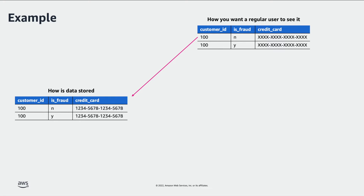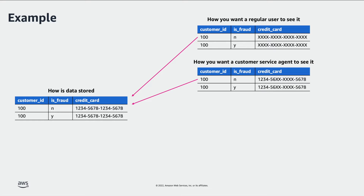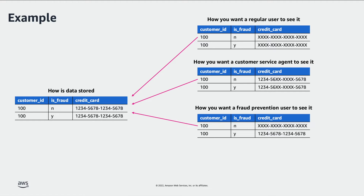For example, when a regular user queries this table, you want them to see the full masked credit card number with all digits replaced by Xs. When customer service agents query this table, you want them to see the first six and last four digits only. When the fraud prevention team queries this table, you want them to see the full credit card number for rows that are marked as fraud. For the other rows, they should see a fully masked credit card number only.